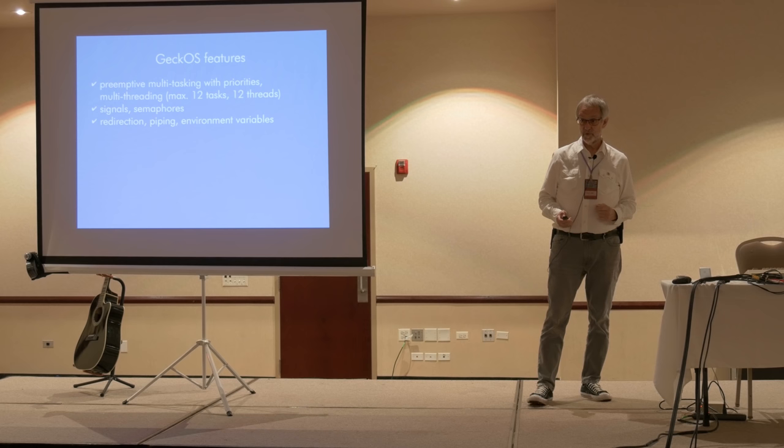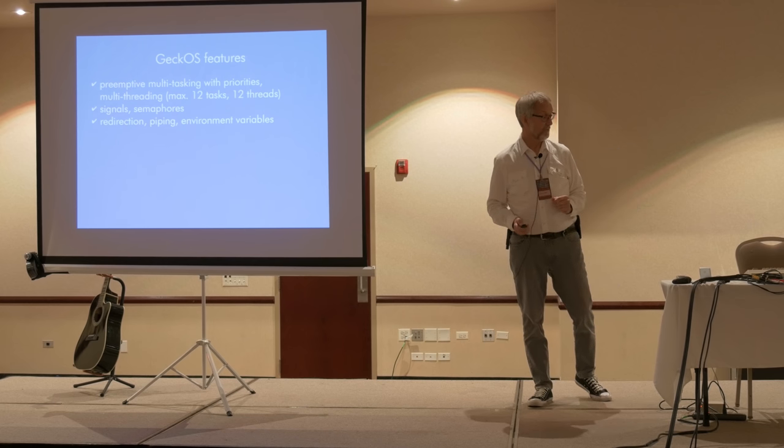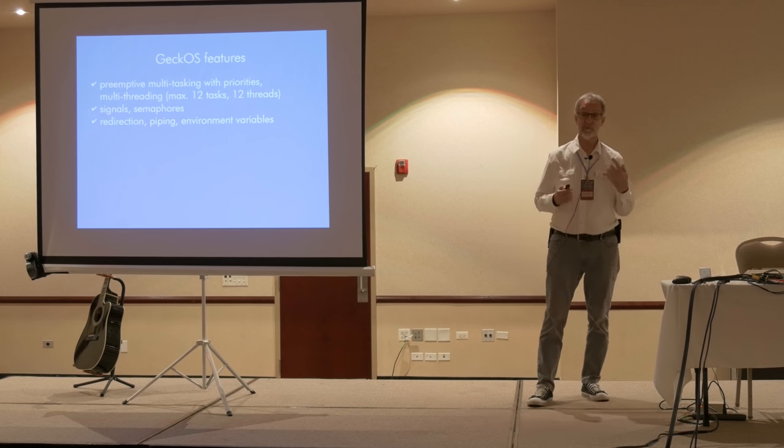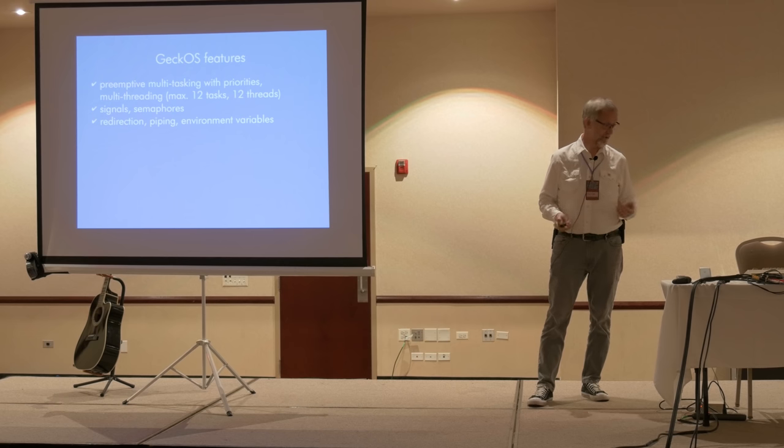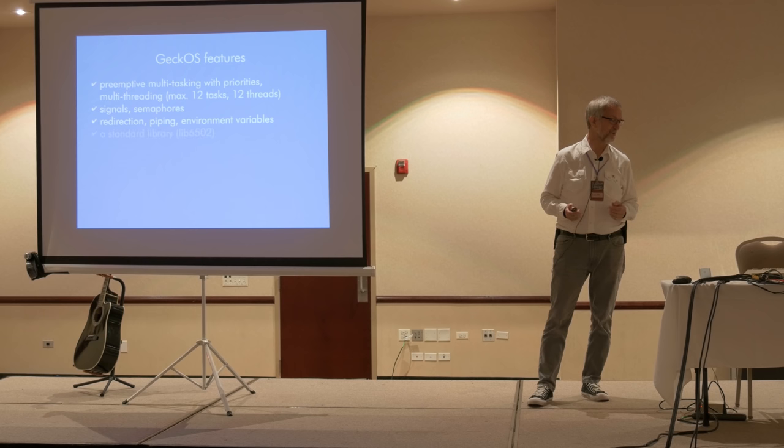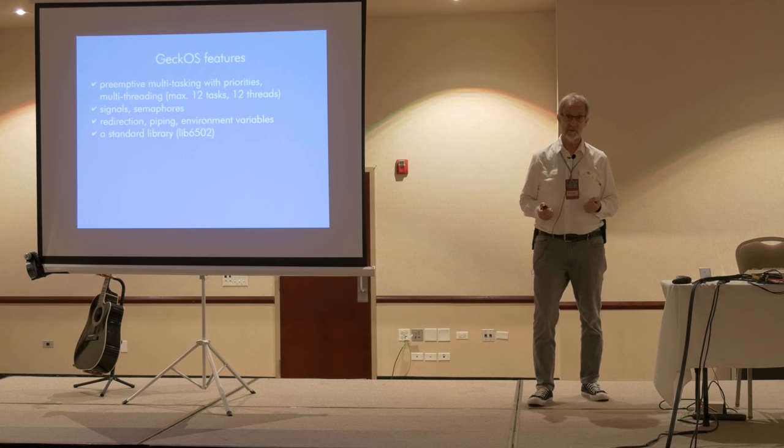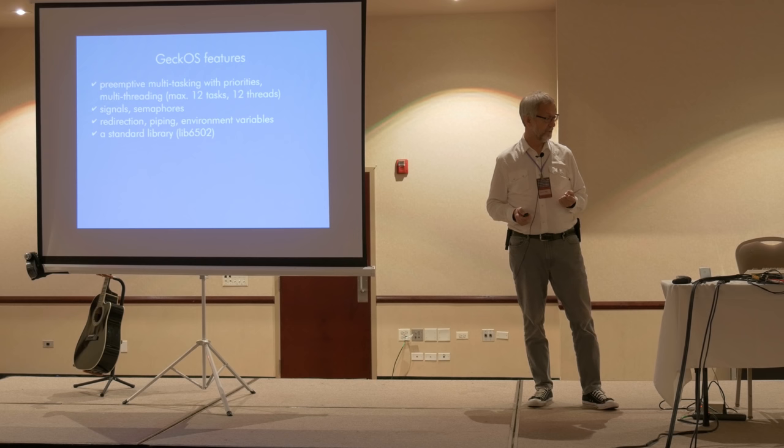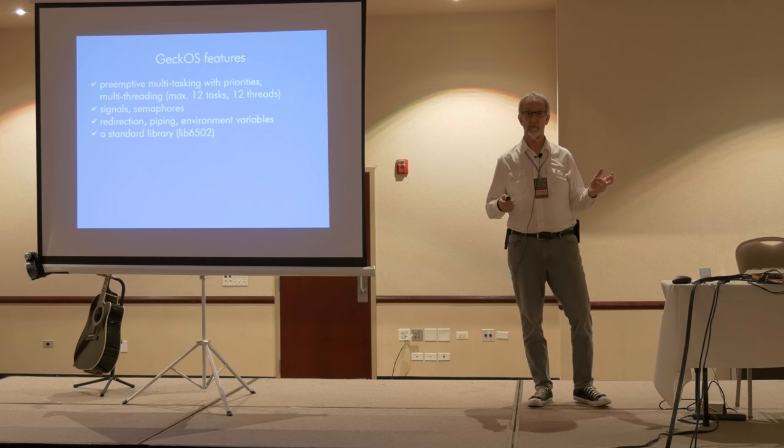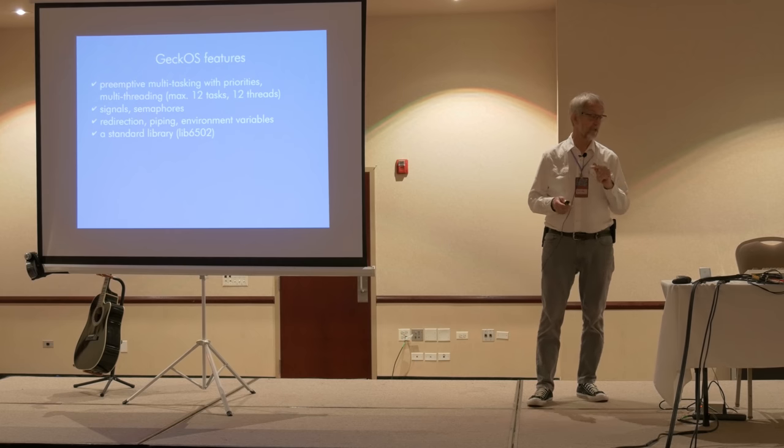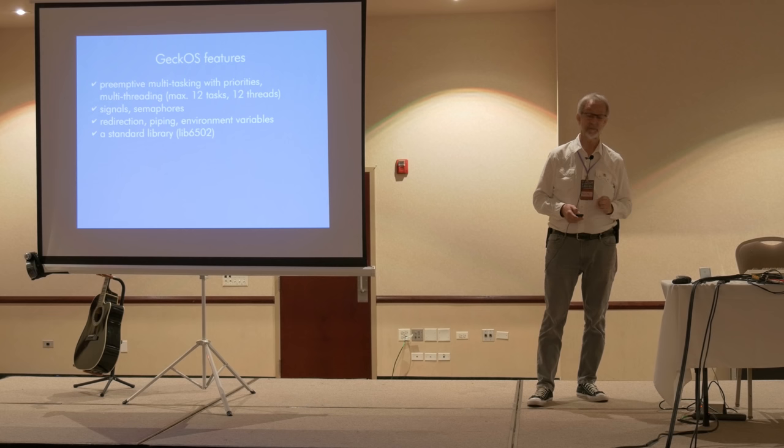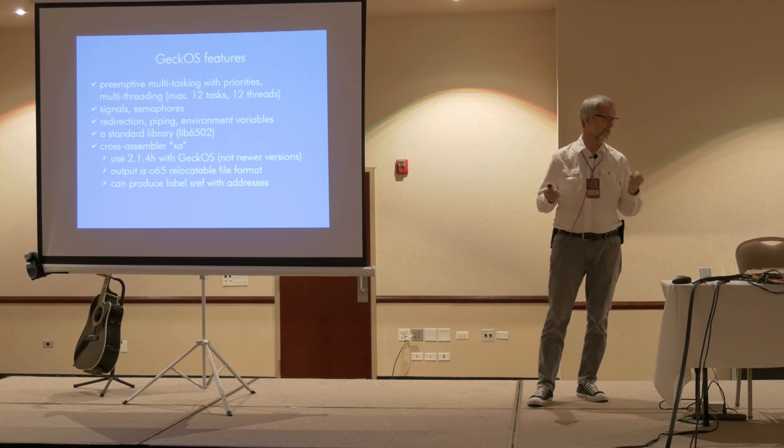I mentioned before about how a user process could stomp all over the kernel because of the 6502 architecture. Well, the way around that is to have semaphores, and if you follow the APIs like a good citizen, you want to do something, you're probably going to ask for a semaphore and try and lock it before you use certain communication buffers, for example. And I'll be demonstrating that as well. It's got redirection in the shell. These last two I haven't worked with too much, but it also has support for piping, environment variables. I mean, you go down the list and it just becomes more and more amazing.